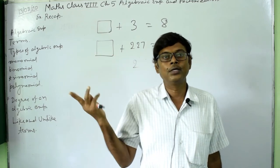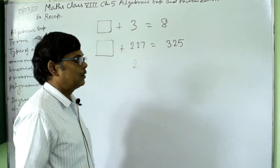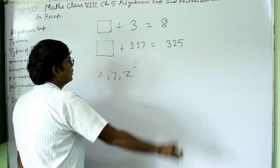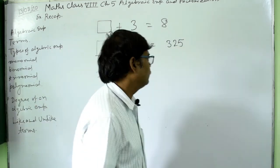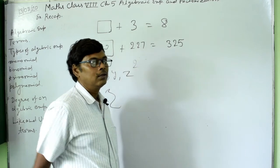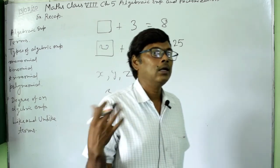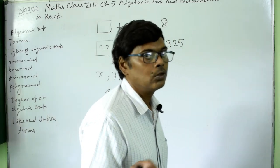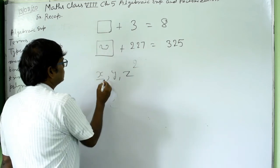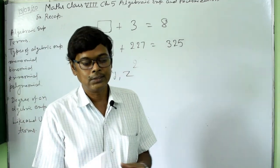Here the box is also a symbol, and in higher classes we replace it with x, y, or z. These symbols are called variables. We use symbols that the whole world recognizes — like x, y, z — rather than arbitrary symbols that are not commonly known.